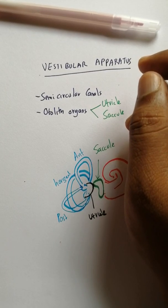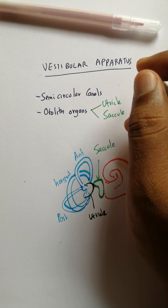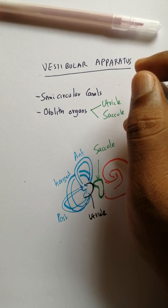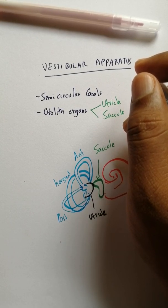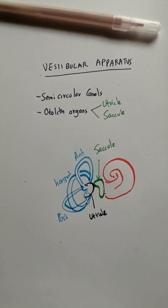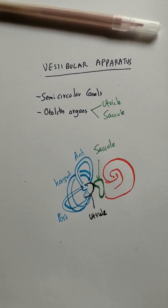Similar to the cochlea, the main receptors here are also the hair cells. So how do they function?